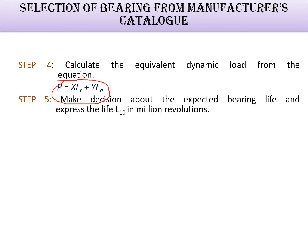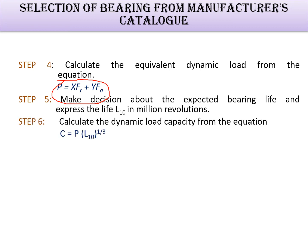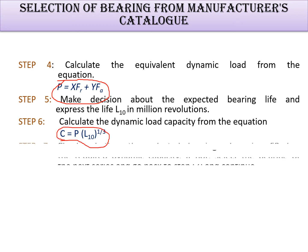In Step 5, make a decision about the expected bearing life. As discussed earlier, the expected bearing life L10 is expressed in million revolutions and is selected based on experience. From the L10 value, you can calculate the required dynamic load carrying capacity C.